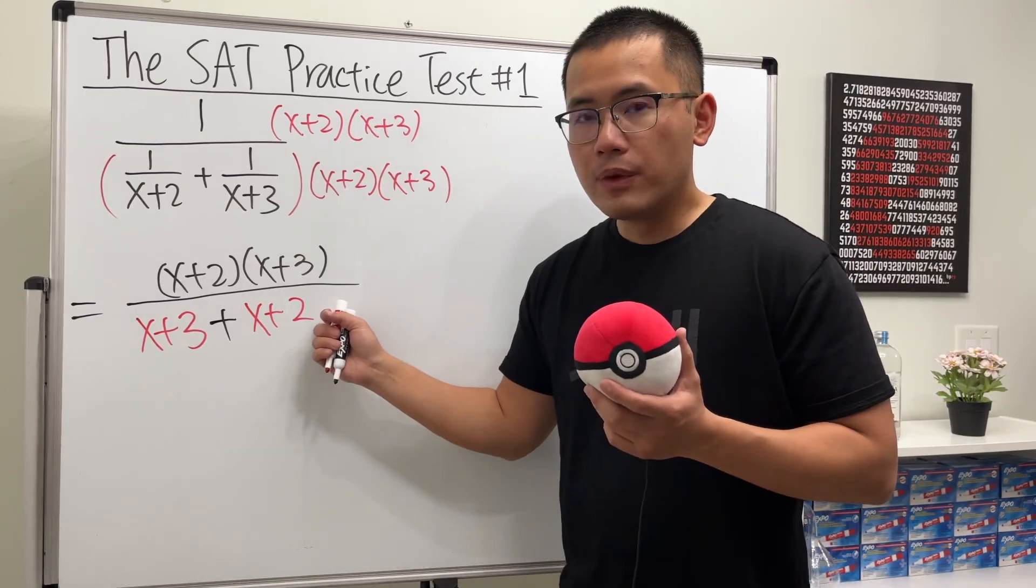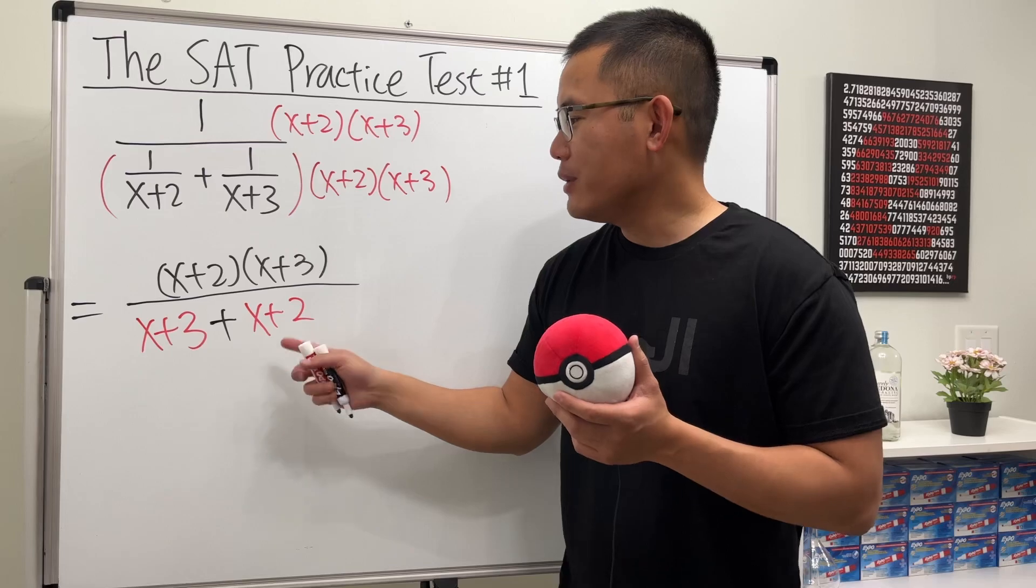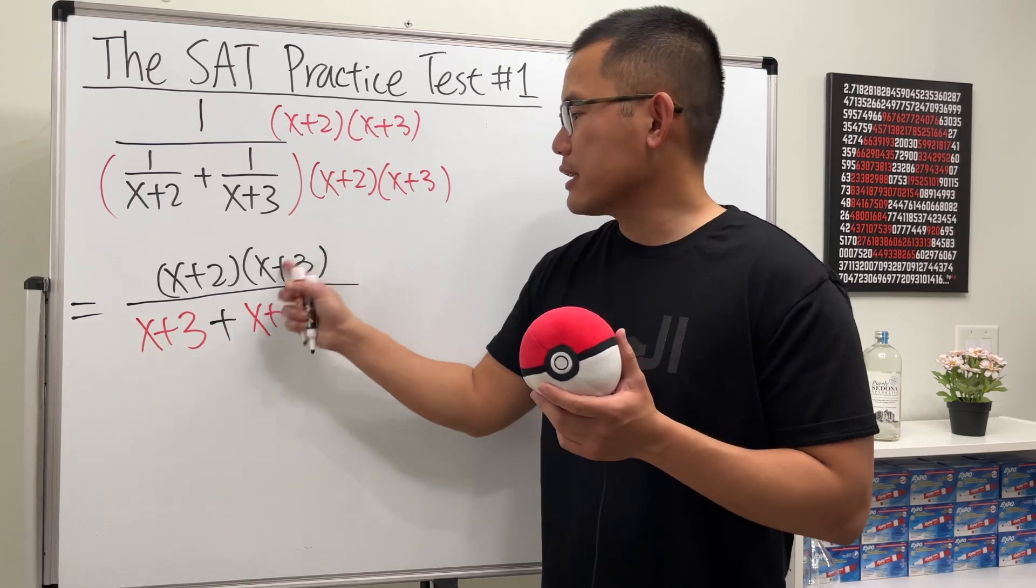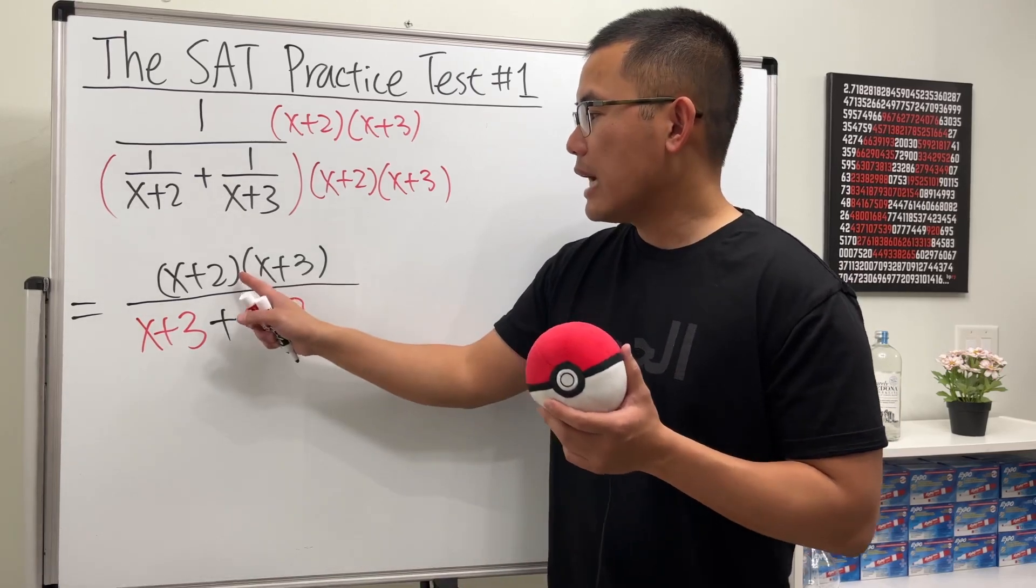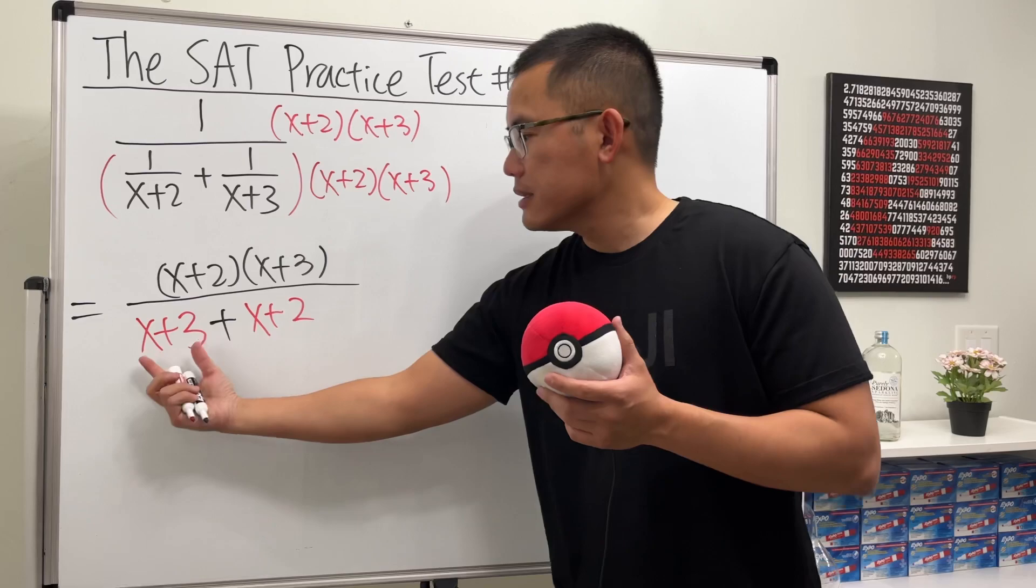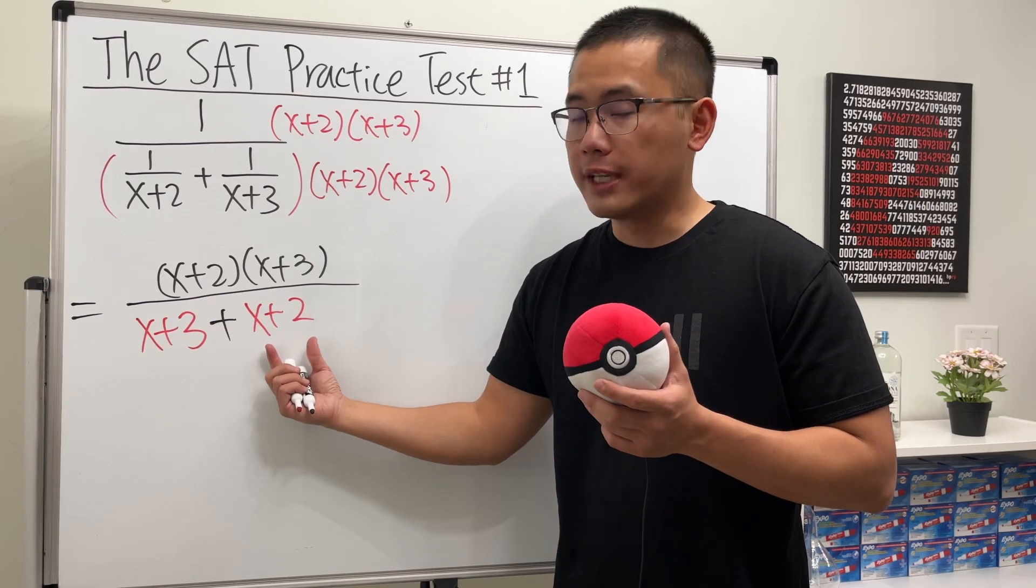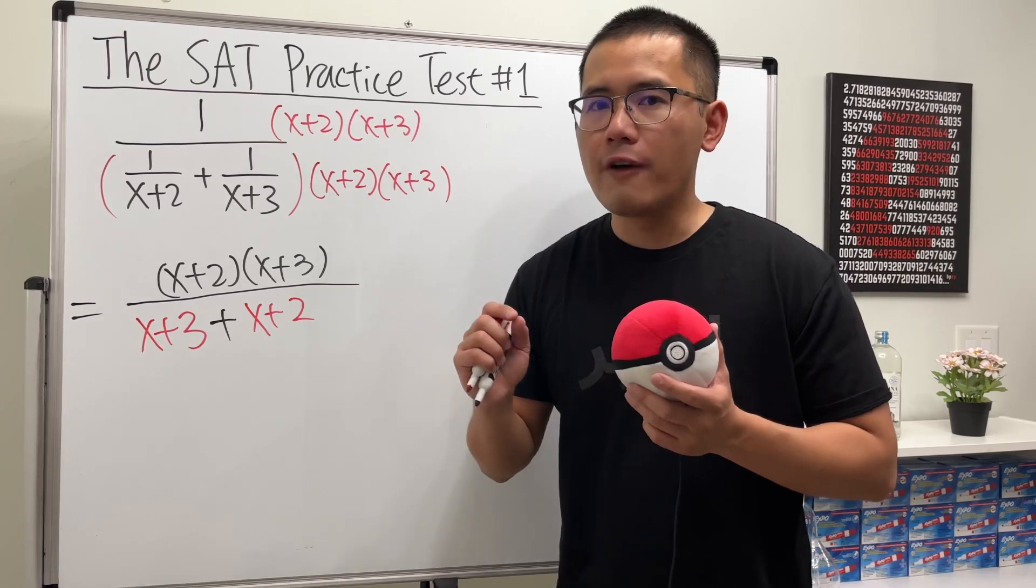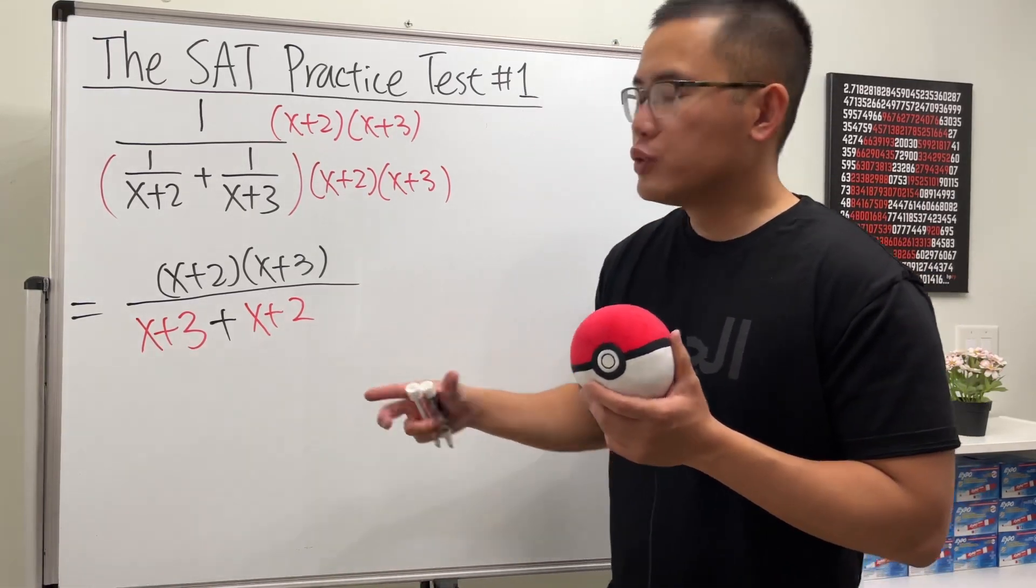By right here, sometimes the common mistake is that people tend to just cancel the x+3 and x+3 because they look the same, but we cannot do that. On the top you see, this factor times that, but on the bottom it's x+3 plus x+2. We cannot cancel because we can only cancel factors that multiply. For the bottom we'll just have to add them up.